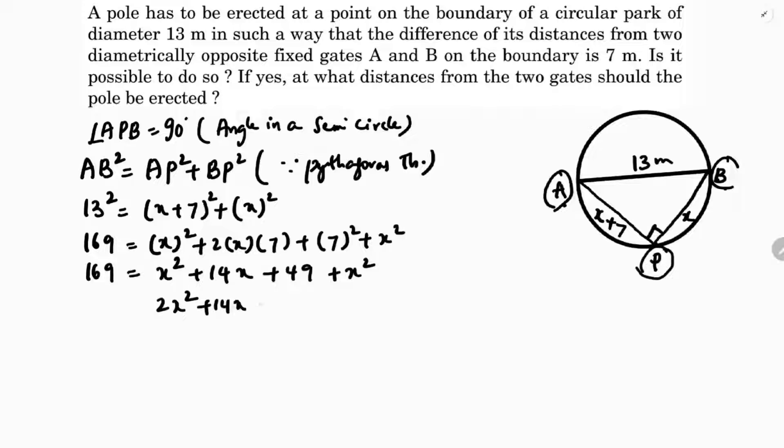X square plus X square, 2X square plus 14X plus 49. If I'll transpose this, 169 minus 169 equals 0, so 2X square plus 14X minus 120. If I'll take 2 common, X square plus 7X minus 60 equals 0. So the quadratic equation is X square plus 7X minus 60 equals 0.